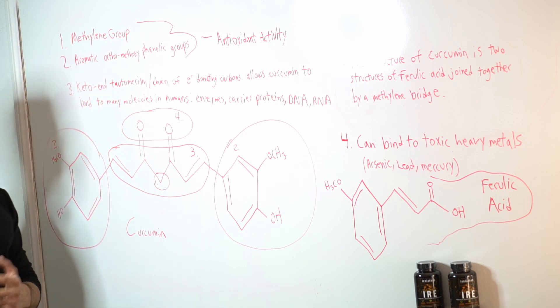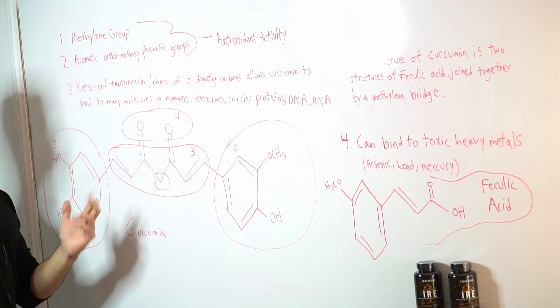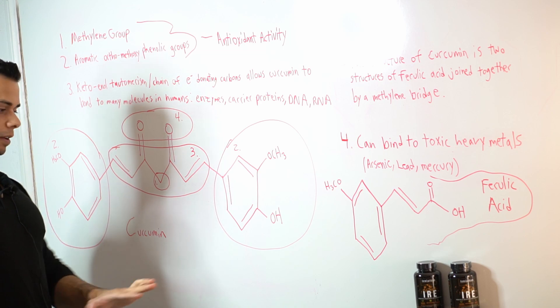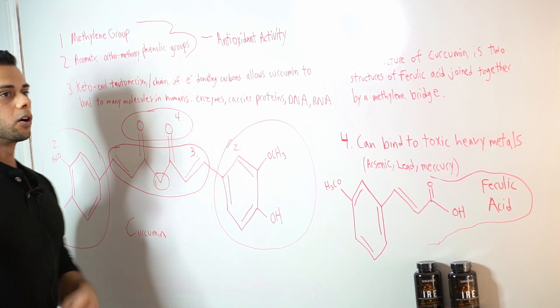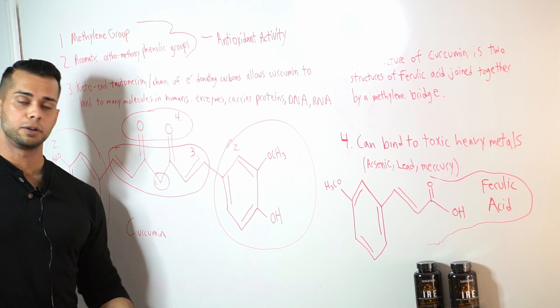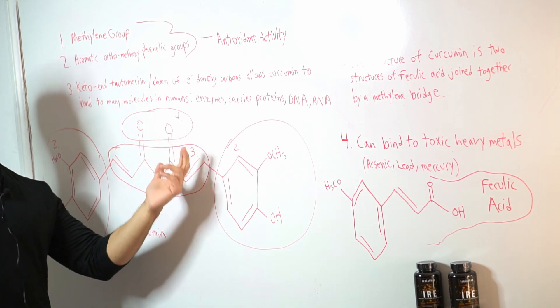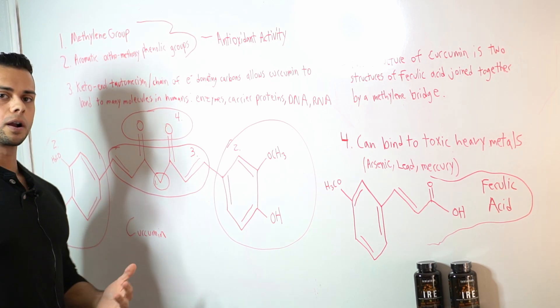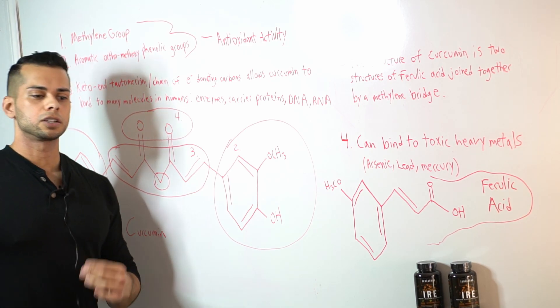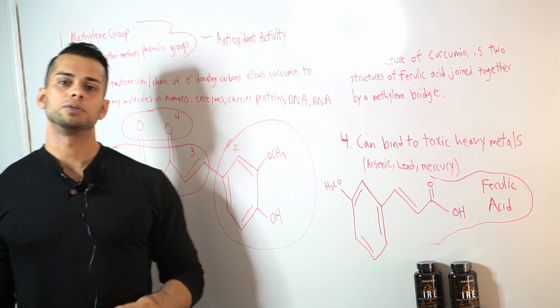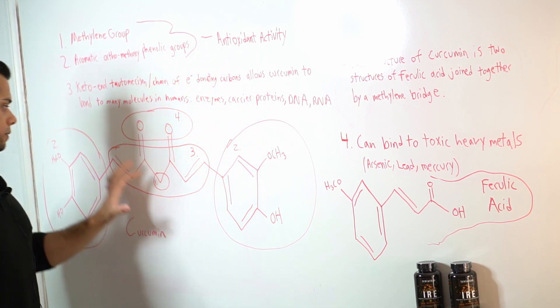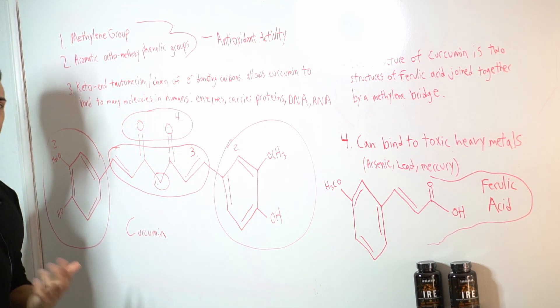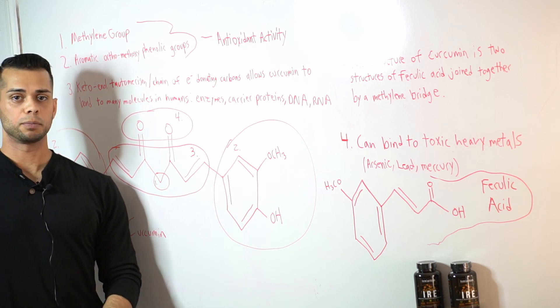So the combination of this keto enol tautomerism combined with the two double bonds you see here on the long carbon chain are able to bond to many different molecules in the human body such as DNA, RNA, enzymes and numerous carrier proteins. So this is another reason that curcumin has such a profound effect on many tissues in the human body just because of the ability of this part of the structure here to bind to so many of those different target molecules in the human body.